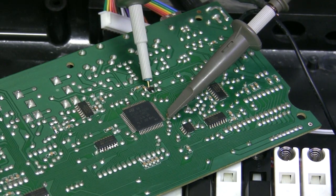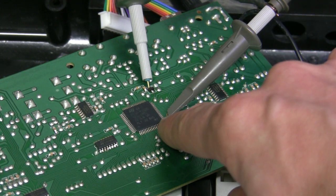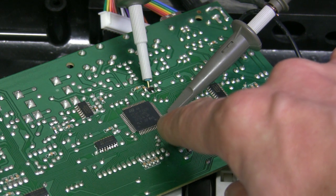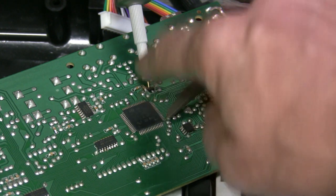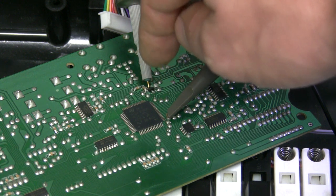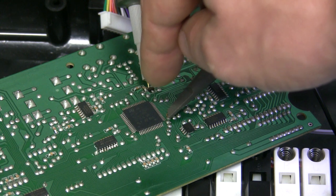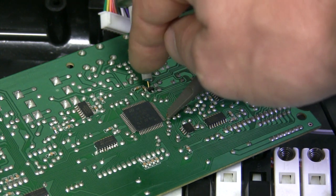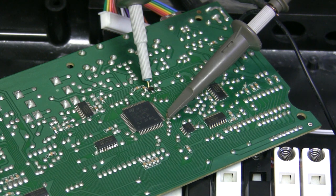So here I connected channel 1 to a little sticking out pin right next to the microcontroller which is a power pin. And channel 2, I will hold it by hand but now it's pointing towards the reset line. So one of the three pins on that little chip. You hear the noise of my oscilloscope which has a noisy fan.